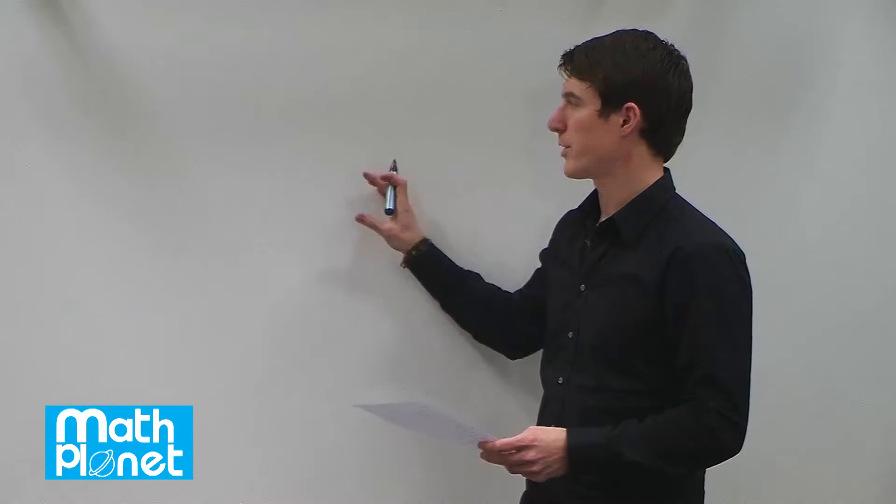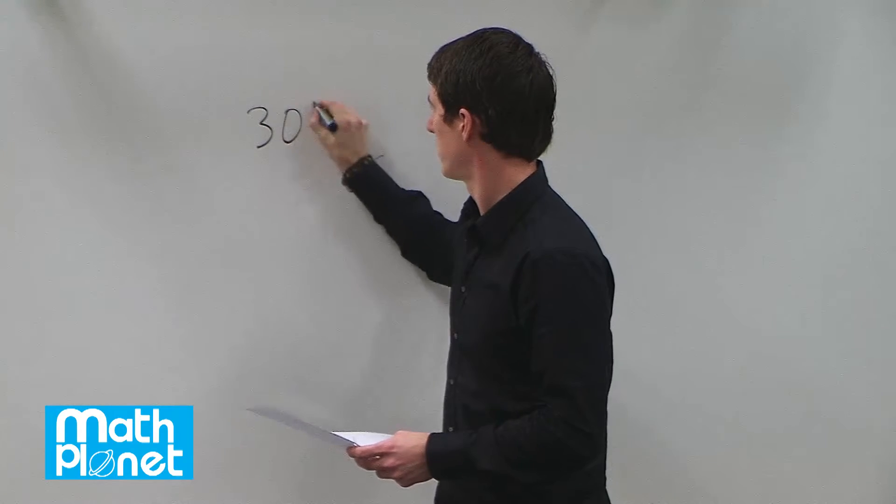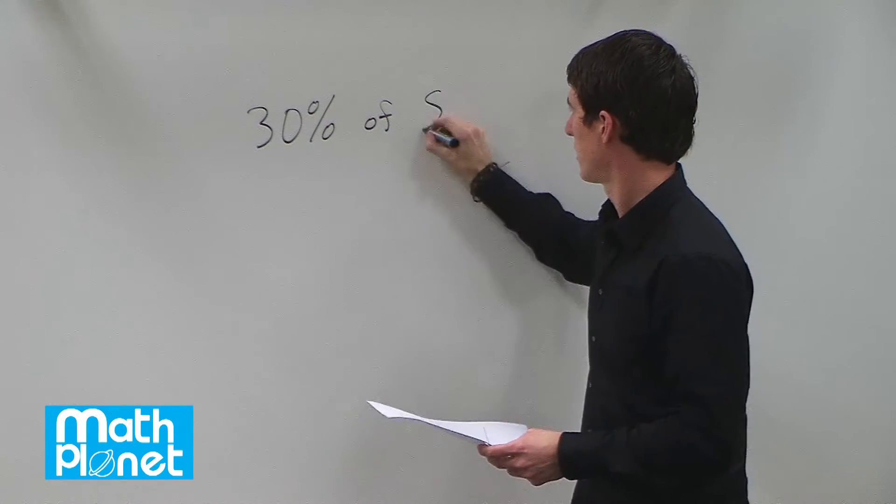To find the amount that we reduce by, we say 30% of the original price, which is $35.